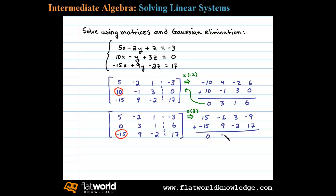Next we want to replace the second element in the third row with a zero. To do that it looks like we can multiply the second row by negative 1.